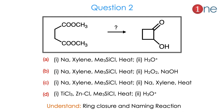Then question number 2. The starting material is a dicarboxylic acid ester. The product is the ring-closed one with a ketone and alcohol inside. The choices given for the reagents are: sodium with xylene and trimethylsilyl chloride and water, or titanium chloride, zinc chloride, or trimethylsilyl chloride. You have to find the reagent for this conversion. From the question you have to understand that ring closure definitely occurs and one named reaction is involved.